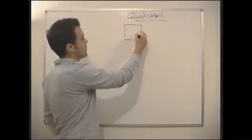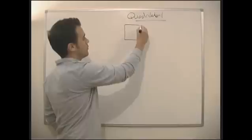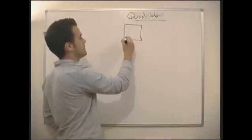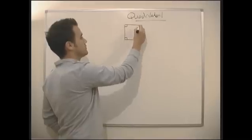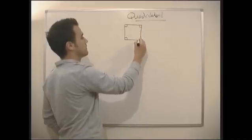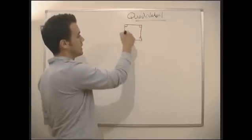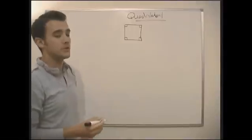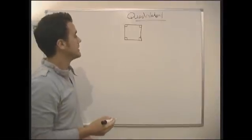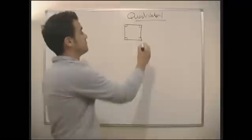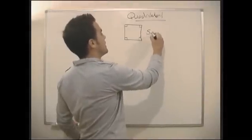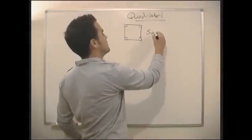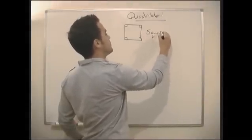A square has all the sides the same, and all the corners are right angles. Pretty easy. If you don't know what a square is, then you really are having problems.